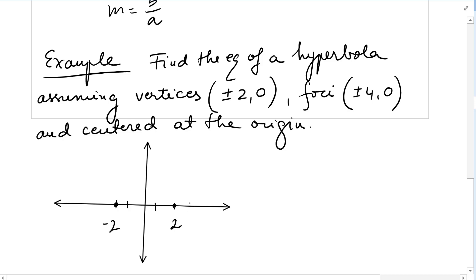The foci are at (-4,0) and (4,0). So that means a equals 2 and c equals 4.